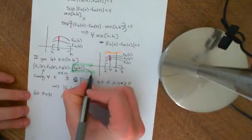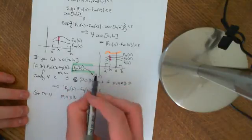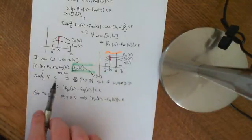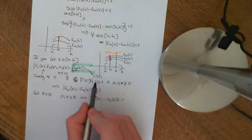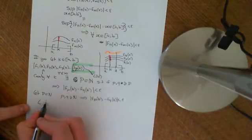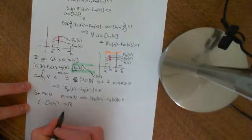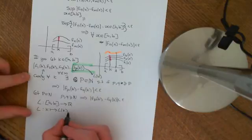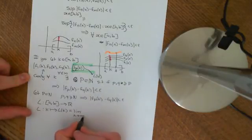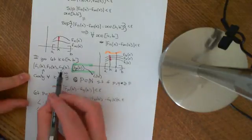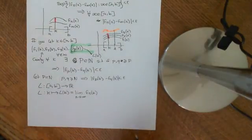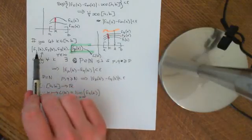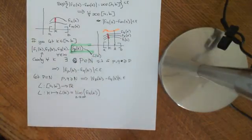So whatever k you give me, the pointwise sequence of real numbers is a Cauchy sequence and therefore has a limit. Let's call this limit L(k) — the limit of the pointwise sequence corresponding to the point k in [A,B]. We can do that for every k in [A,B], so we can construct a whole function L mapping [A,B] to the real line, where L(k) equals the limit as n approaches infinity of f_n(k). We'll stop here and continue in the next video — so far we've shown this sequence of functions does have a pointwise limit.